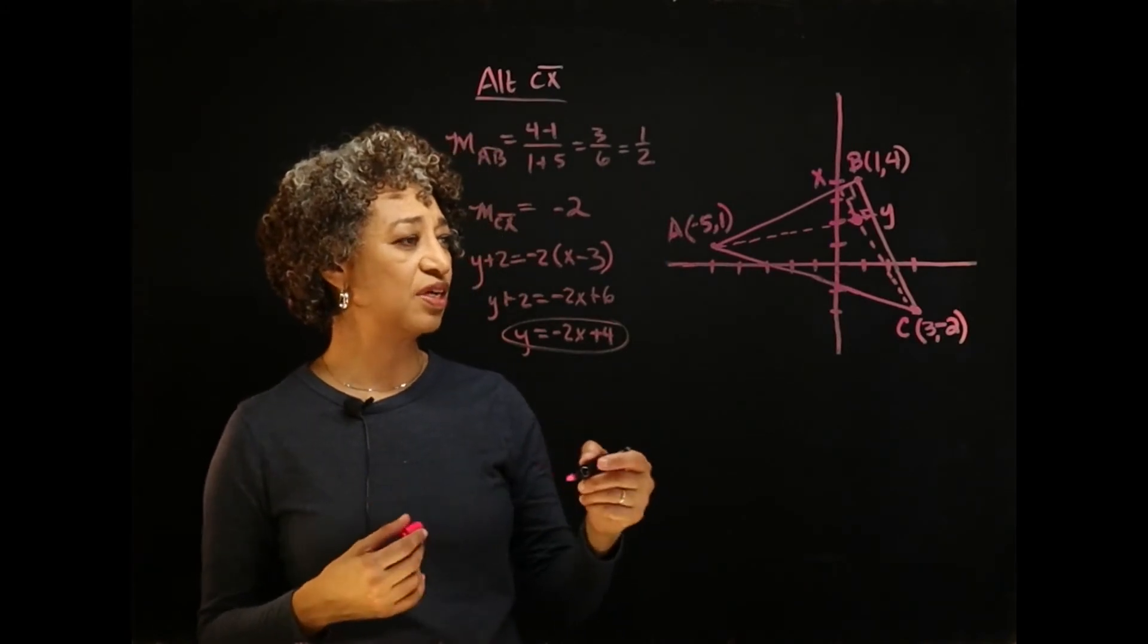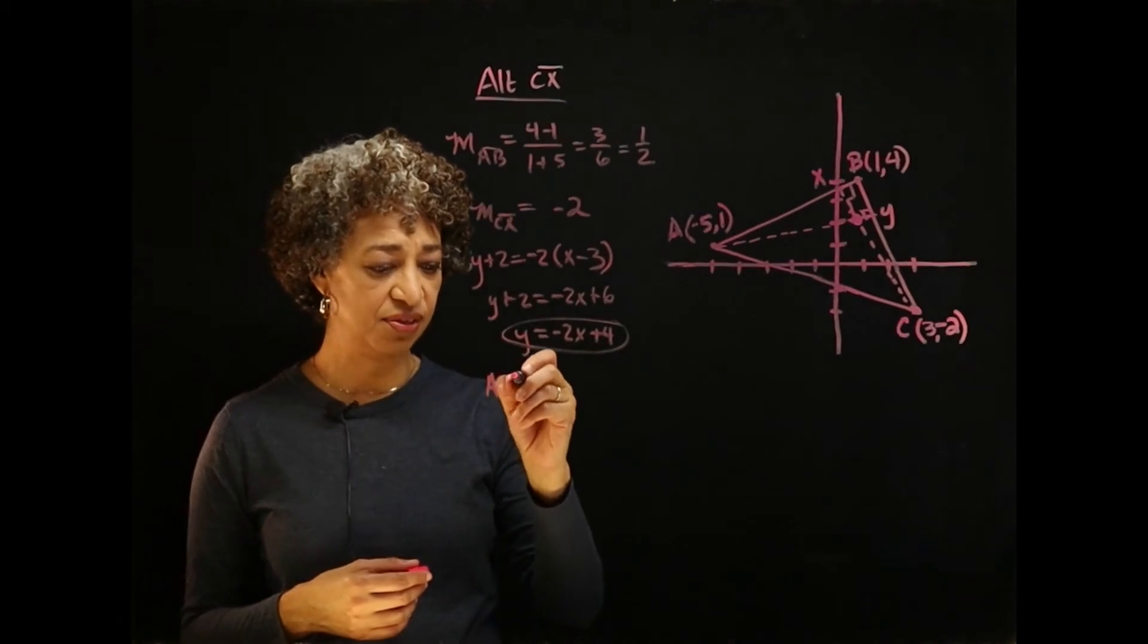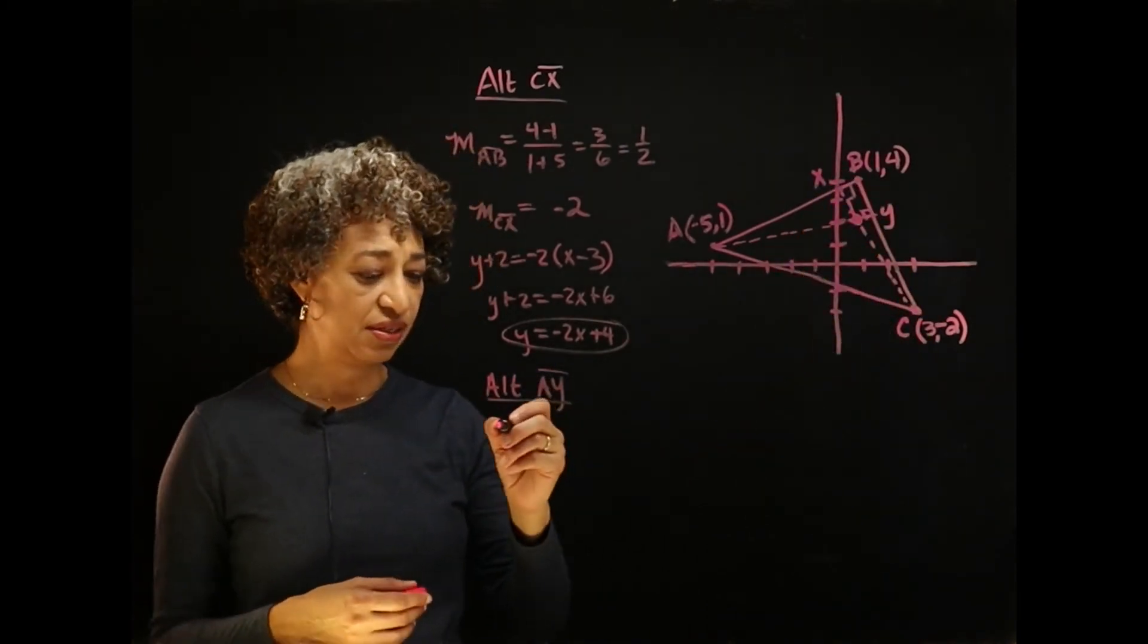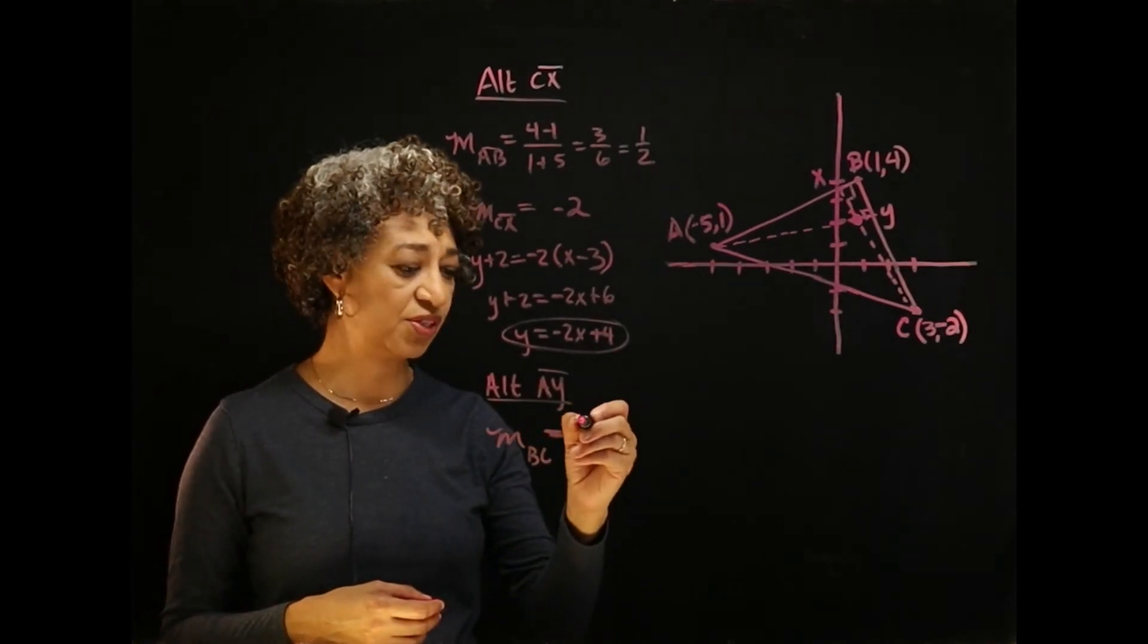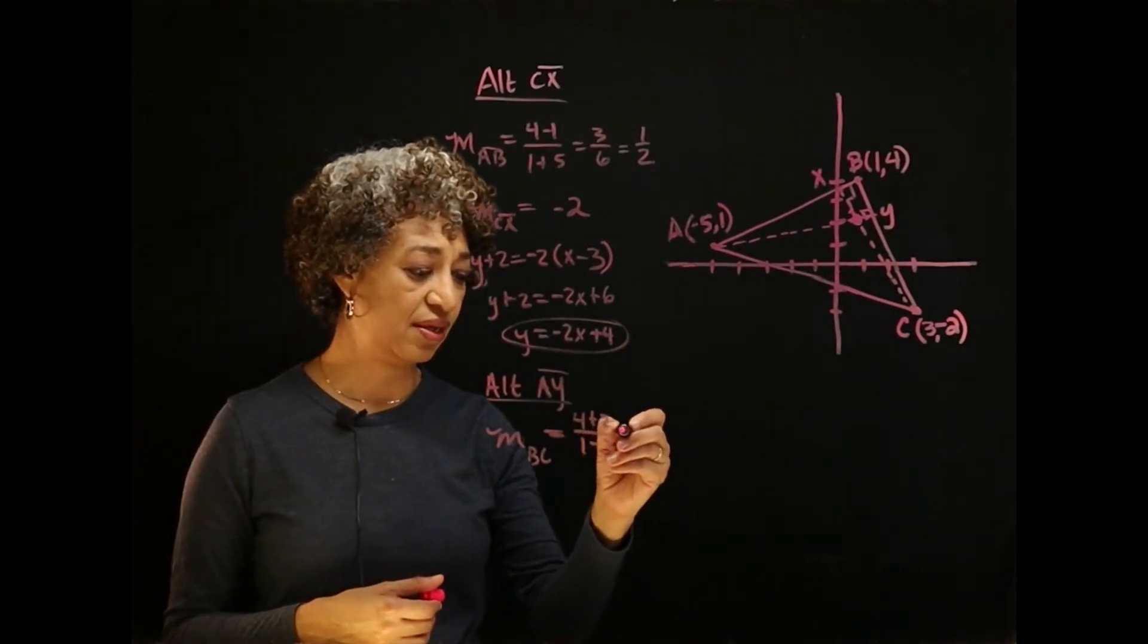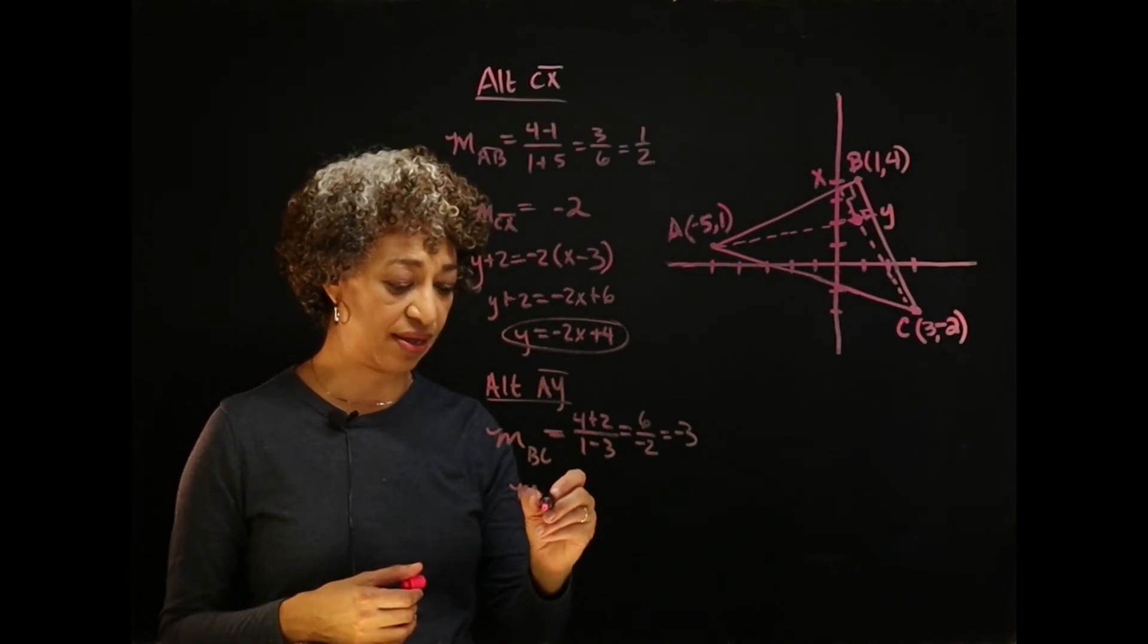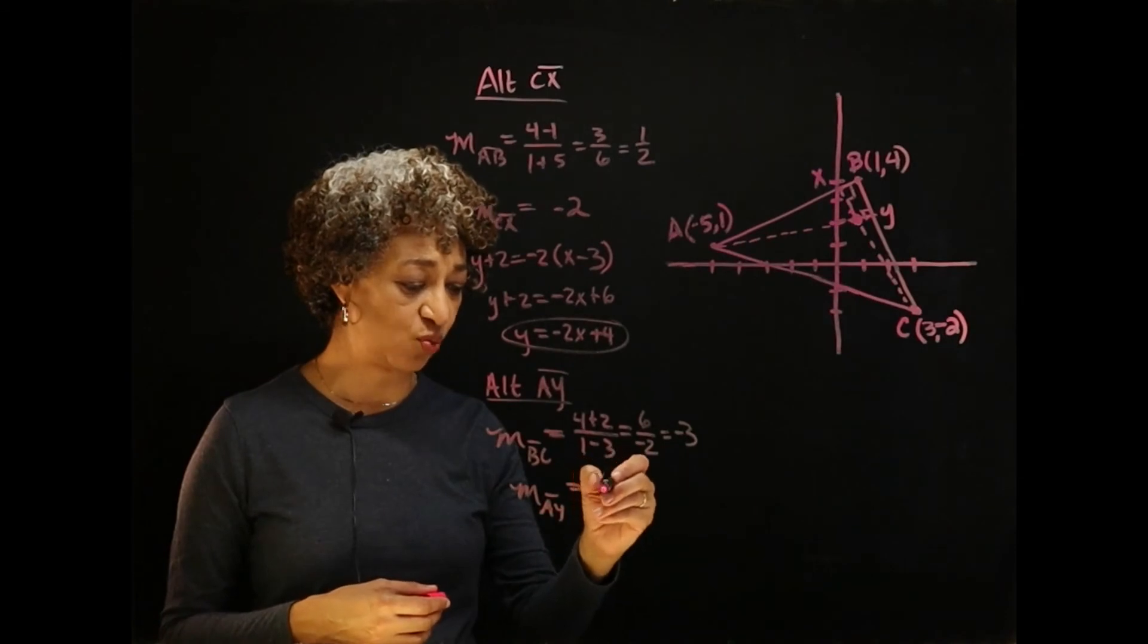Now we need the equation of altitude AY. So I'll do the same procedure for altitude AY. And I will find the slope of the side that's perpendicular to it. So the slope of BC then is 4 minus a negative 2 over 1 minus 3, which is 6 over negative 2, which is negative 3. So the slope of this altitude, altitude AY, is the opposite reciprocal of that, which is 1 third.